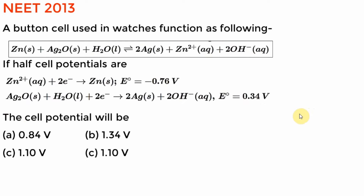This particular question was asked in 2013. A button cell was given with the reactions provided — you don't have to be comfortable with the specific reactions. The boxed equation is the target equation. How do I get it from these two equations? Note that the target equation has no electrons in it, so it is not a half cell reaction — it's a full cell.